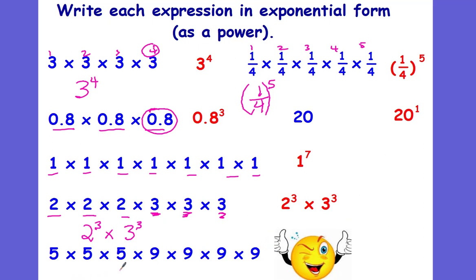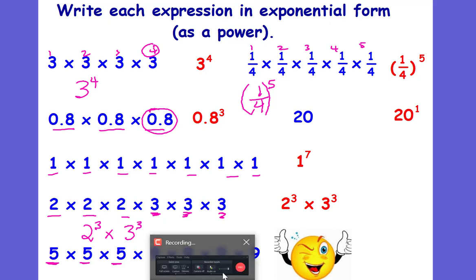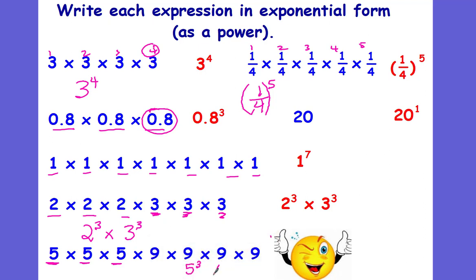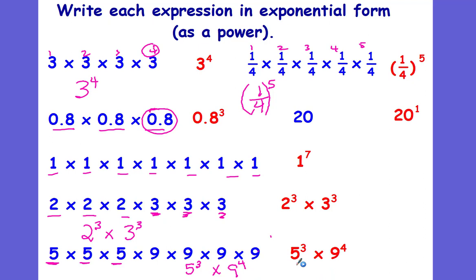And then our last example. We have two different numbers, so we take each number individually. We start with 5 — the 5 is being repeated 3 times, so it's a base of 5 with an exponent of 3. And we're going to multiply that by 9 — how many times is 9 being repeated? 4 times. So this is 5 cubed, or 5 to the 3rd power, times 9 to the 4th power.